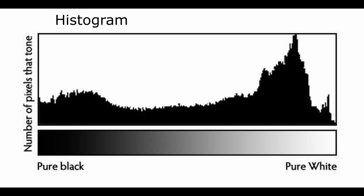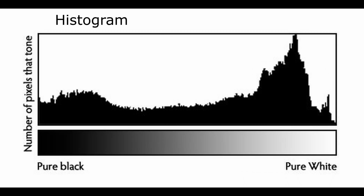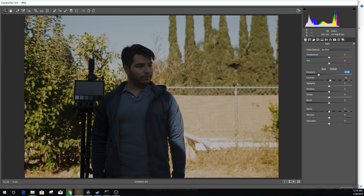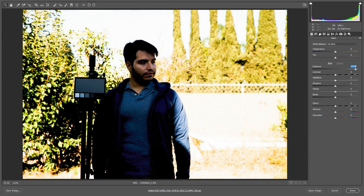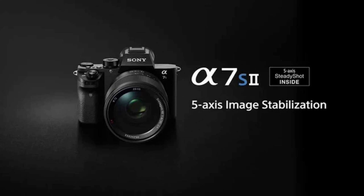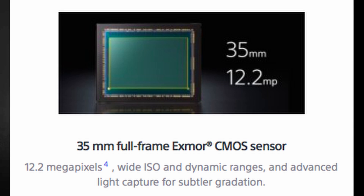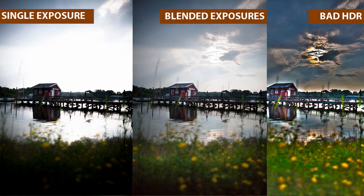Cameras, however, struggle with this and often information on either end is clipped, meaning that anything beyond those clipping points is simply stored as pure black or pure white. This is why, often in pictures, the bright blue sky you remember simply comes out as white, or where your sky is nice and detailed, your subject is really dark and not at all like you remember the scene. High-end cameras, usually with bigger sensors, are actually able to capture more detail than your standard camera, even more than your phone's fancy HDR mode — which, to be fair, has really improved over recent years.